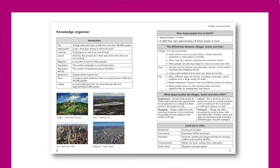The booklet begins with a double page knowledge organiser. Key geographical vocabulary is included, as well as picture examples to make really clear the differences between villages, towns and cities. A summary of those differences is then provided, as well as how land is used in cities.